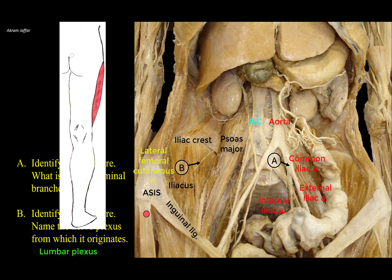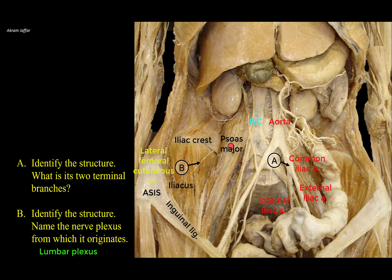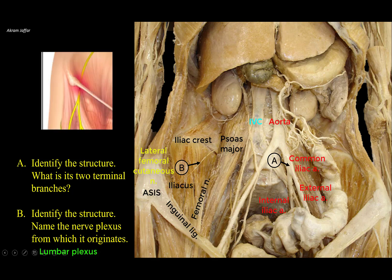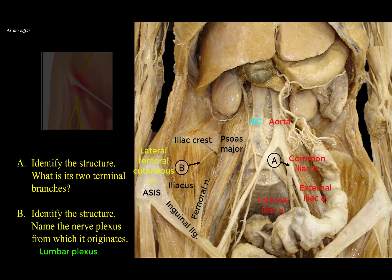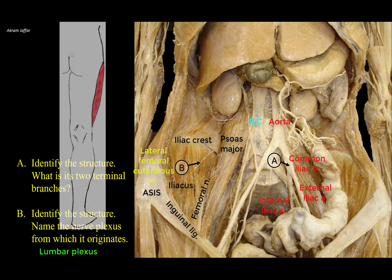In the thigh it supplies the skin area on the lateral side — hence its name. Note that the femoral nerve also arises lateral to psoas major, but is much larger as it supplies more cutaneous areas as well as muscles and joints. One important clinical point: a condition called meralgia paraesthetica results from compression of this nerve as it passes deep to the inguinal ligament — compressed against the anterior superior iliac spine — causing aching, burning, numbness, or stabbing pain in the lateral thigh.